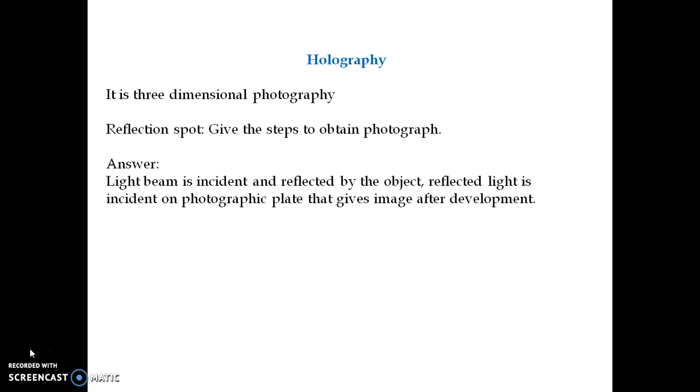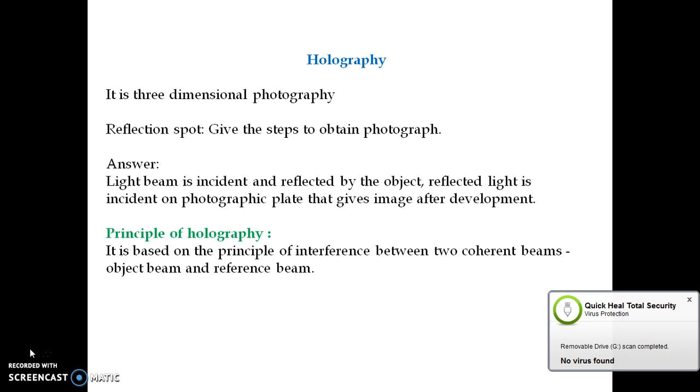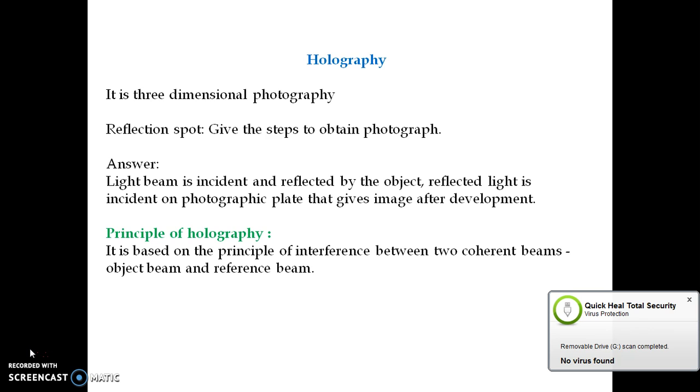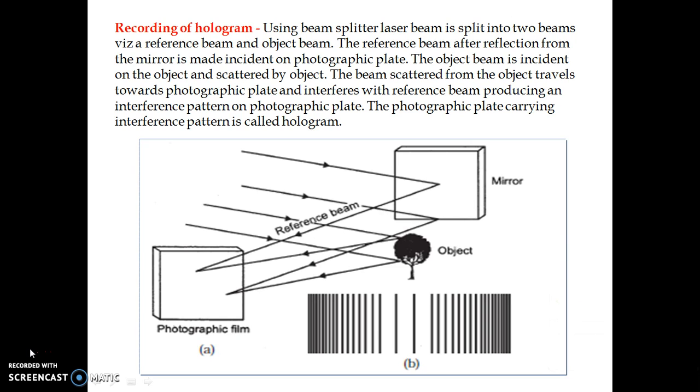That is nothing but the image of the object and it has two-dimensional characteristics. Now we are talking about three-dimensional image of the object. So what is the principle used here? The principle used here is interference. There are two coherent beams: one is object beam and the other is reference beam. So it is based on the principle of interference between object beam and reference beam to obtain three-dimensional image.